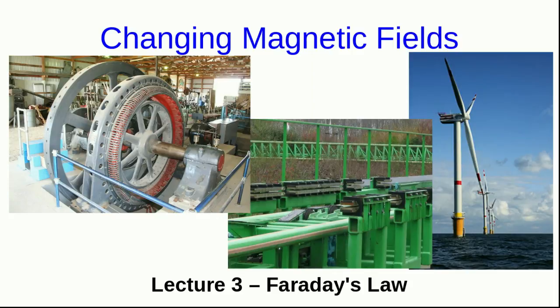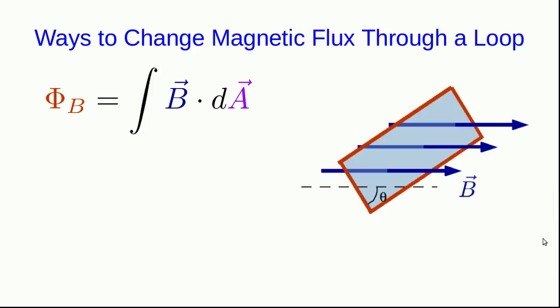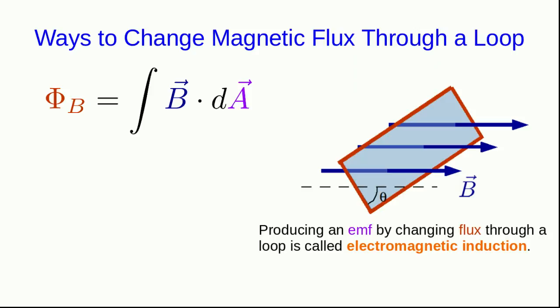Hello, and welcome to Lecture 3 of Changing Magnetic Fields in Phys 1204. We have an informal statement of Faraday's Law from an earlier video lecture, and now it's time to write down a mathematically precise statement. Our informal statement says that a changing magnetic flux through a loop induces a current in the loop, or equivalently, it induces an emf around the loop. This process of producing an emf by changing the flux through it is called electromagnetic induction.